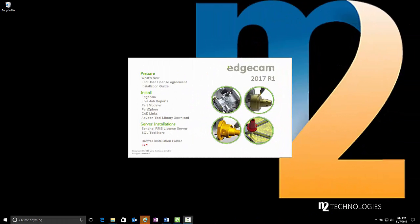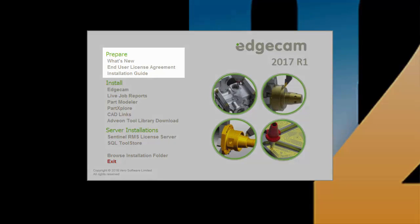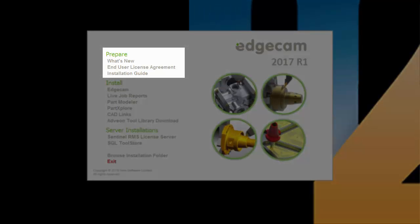After downloading the Edgecam 2017 R1 DVD image, extracting the contents, and opening the start here .hta file, you will have the installation navigation screen shown here. We suggest that before installing you should refer to the installation guide located in the prepare section for complete information on the software installation process.